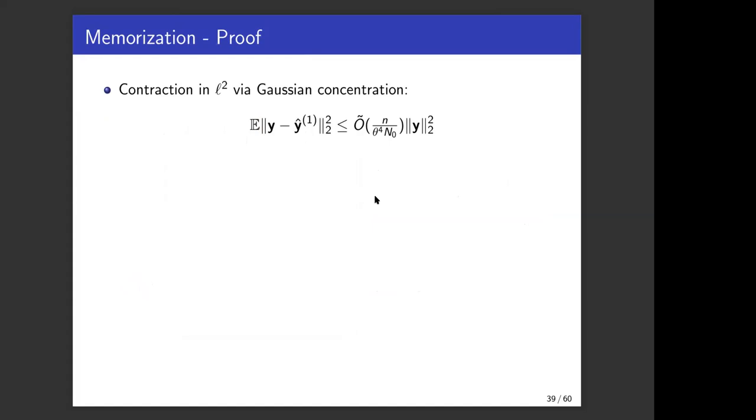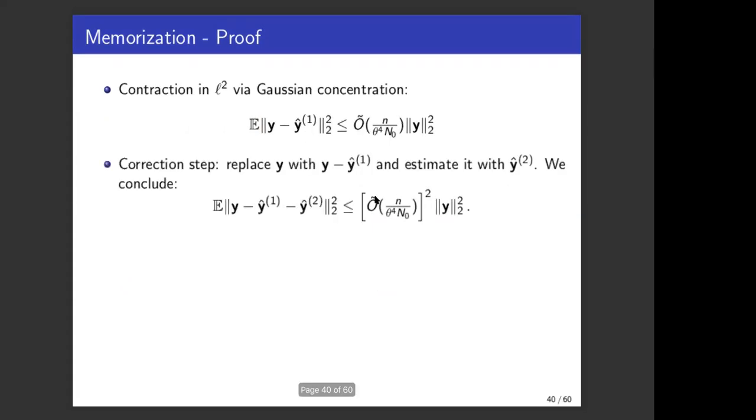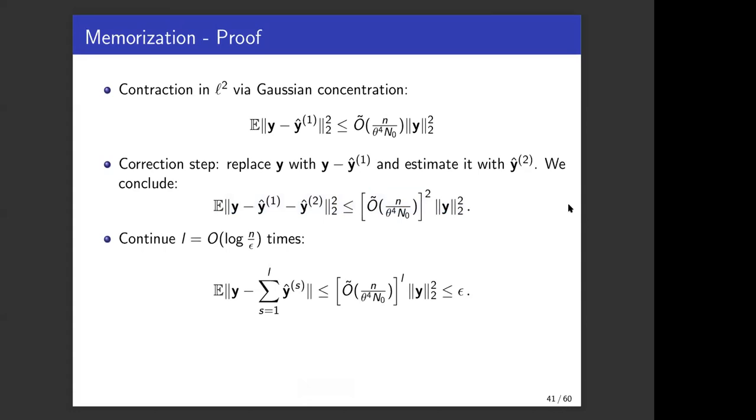When n naught, the number of neurons we used in the first step, is larger than o tilde n over theta to the 4, there is a contraction. Now y minus y_1 hat is just another set of labels over the same point so we can replace it and estimate it with y_2 hat, that is the first level of correction. We obtain that the error after two correction steps is this equation where we have a square which is a second contraction. We don't have to stop after two times, we can continue for o of log n over epsilon times and we show that we have error at most epsilon. From this equation we conclude that memorization requires o tilde n over theta to the 4 log 1 over epsilon activation functions which are completely relu.